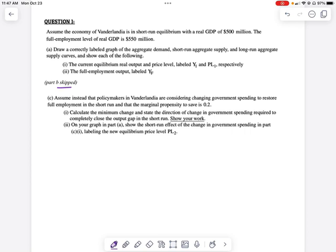So the question says, assume that the economy of Verlandia is in short run equilibrium with a real GDP of 500 million and the full employment level of real GDP of 550. Then you'll notice that we need to graph that. So one of the things that we have to pay close attention to is how they want us to label this.